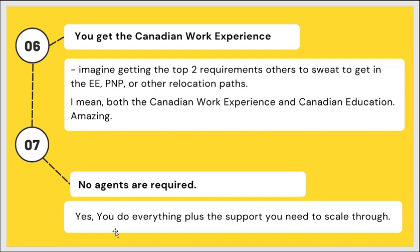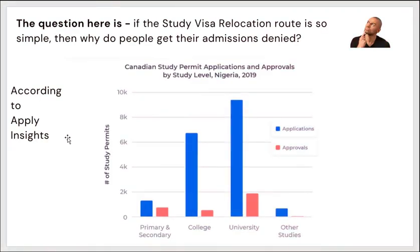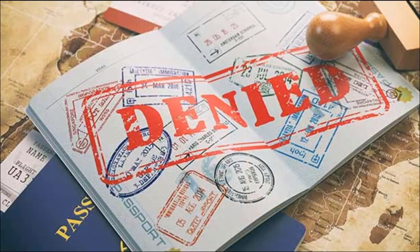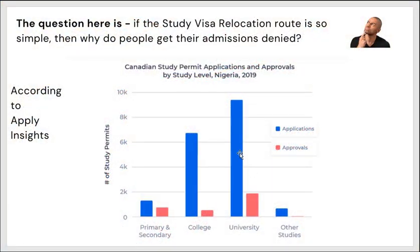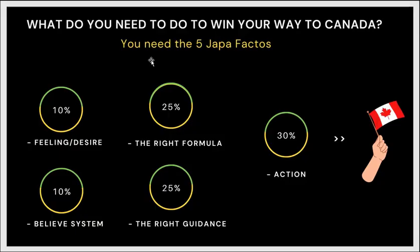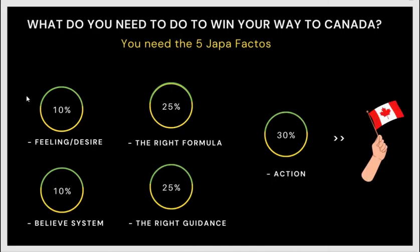The question is: if the study visa relocation route is so simple, then why do people get their admissions denied? If you look at this presentation, the blue line shows the number of applications and the red shows the number of approvals — the approvals are so low compared to the applications. So if the study route is very easy, why do people get denied? I'm going to explain everything to you.